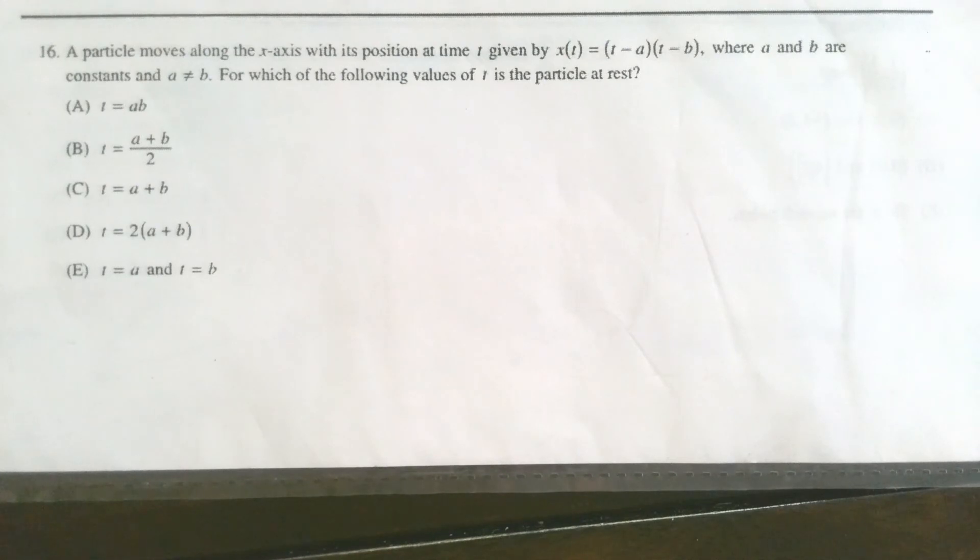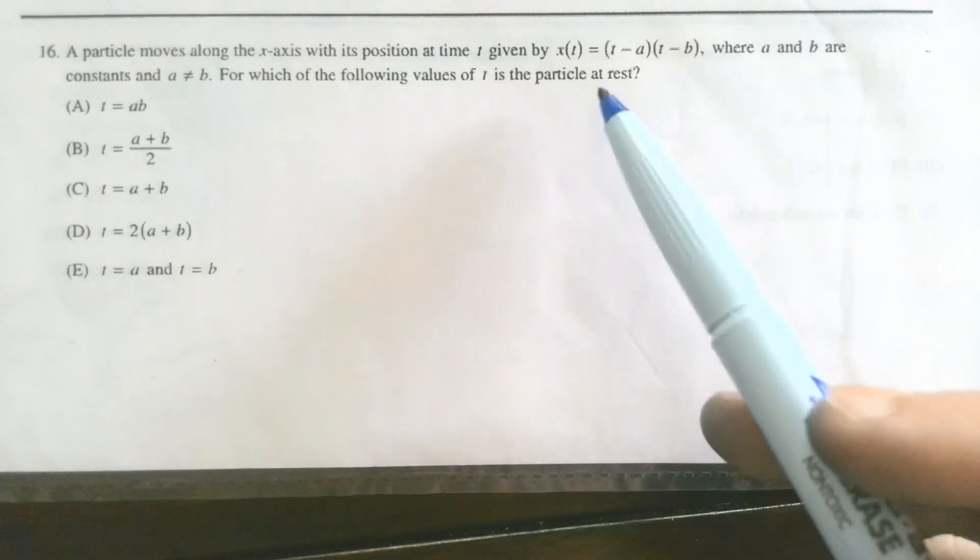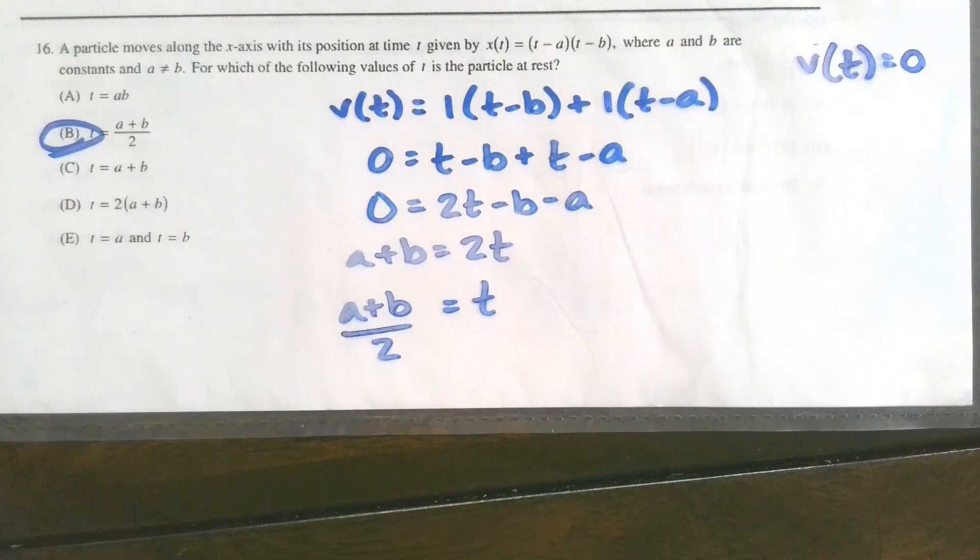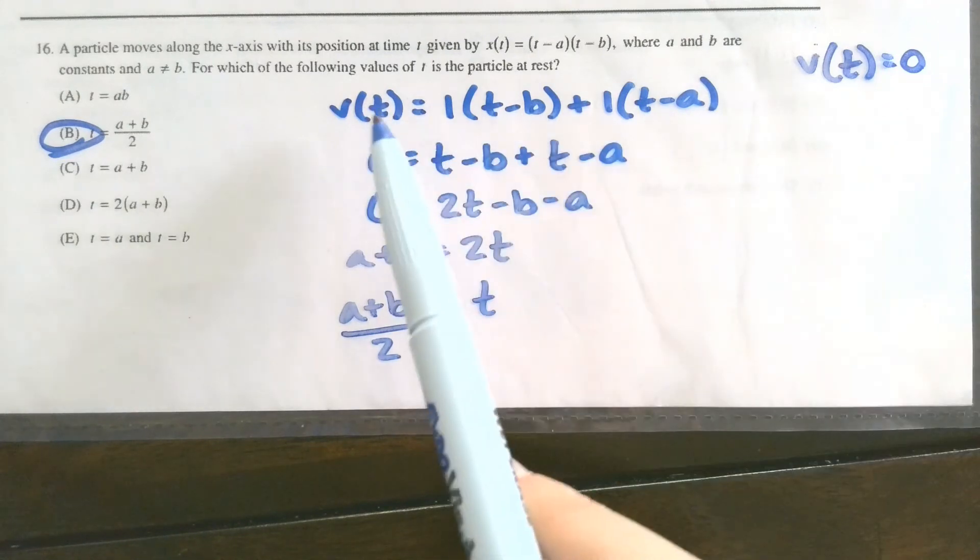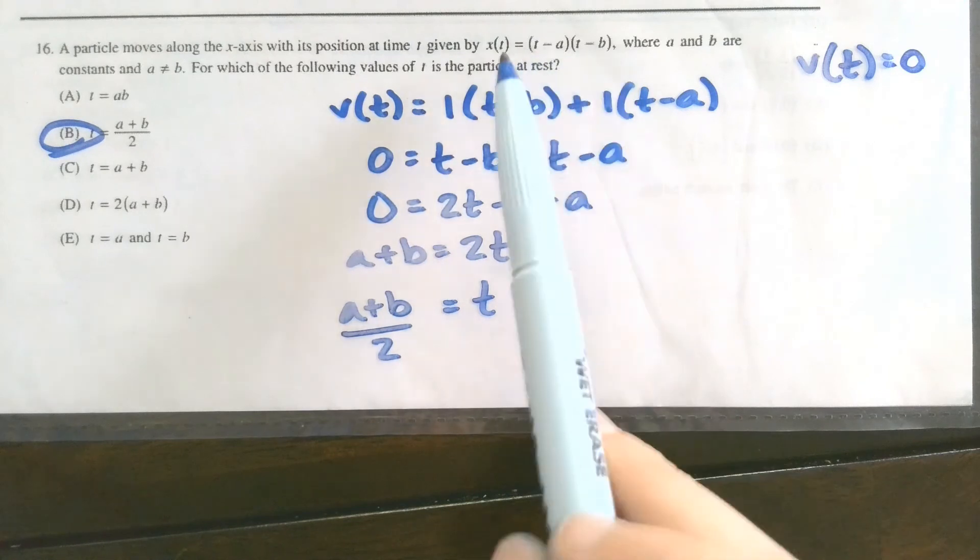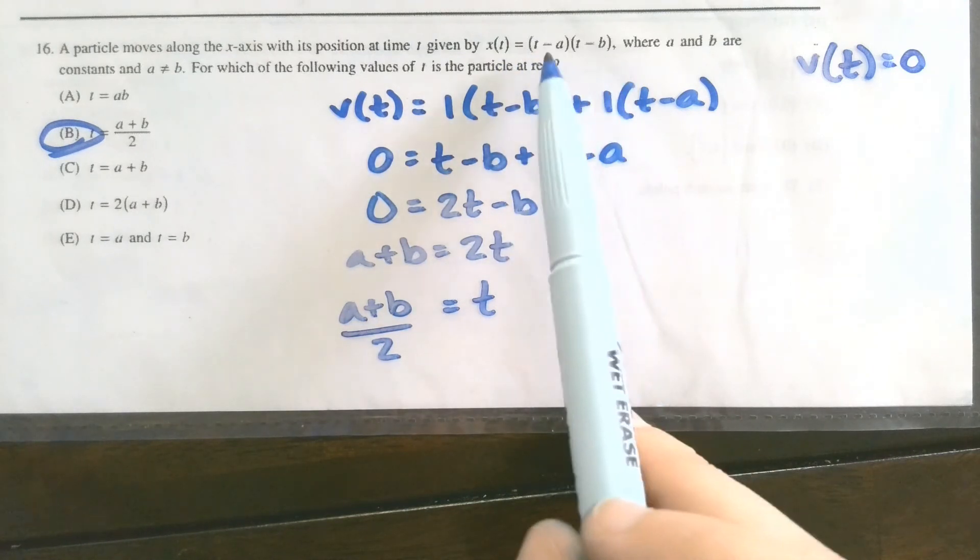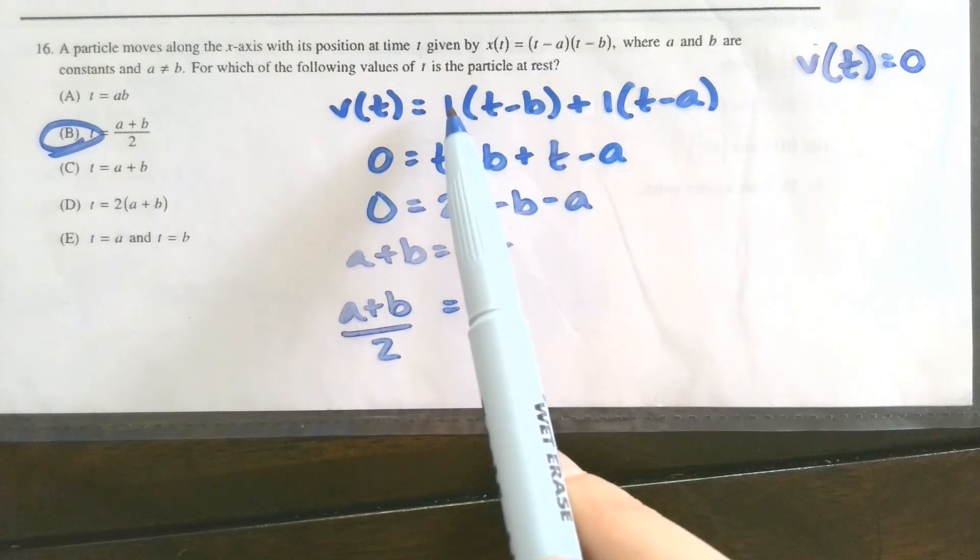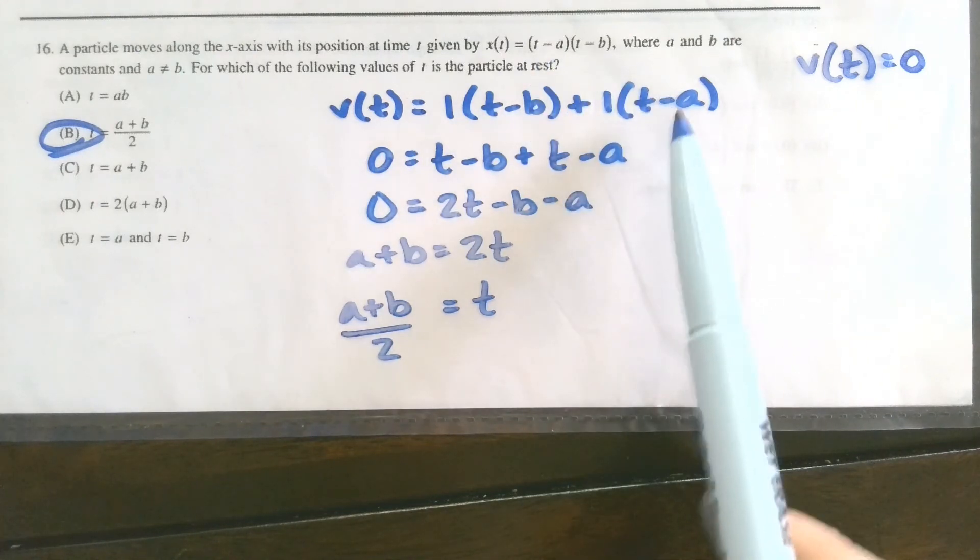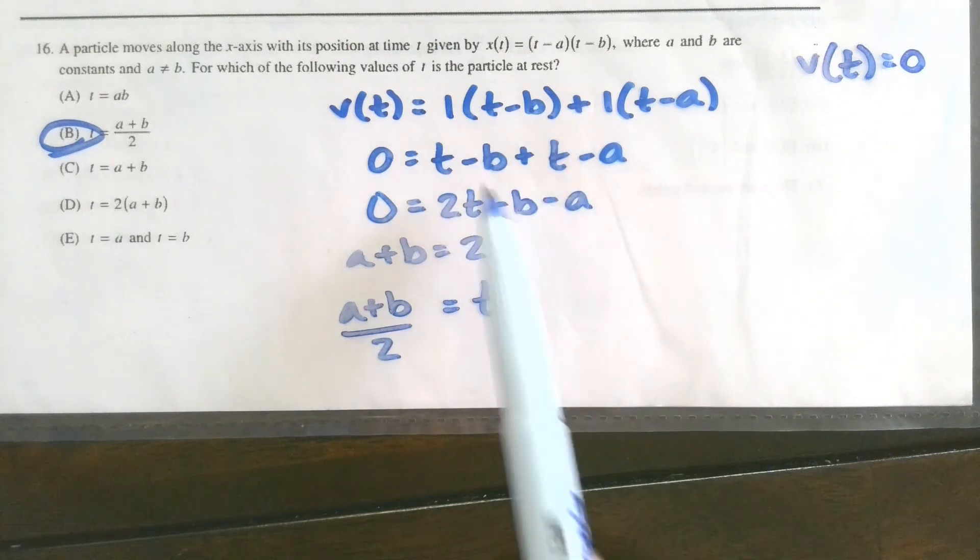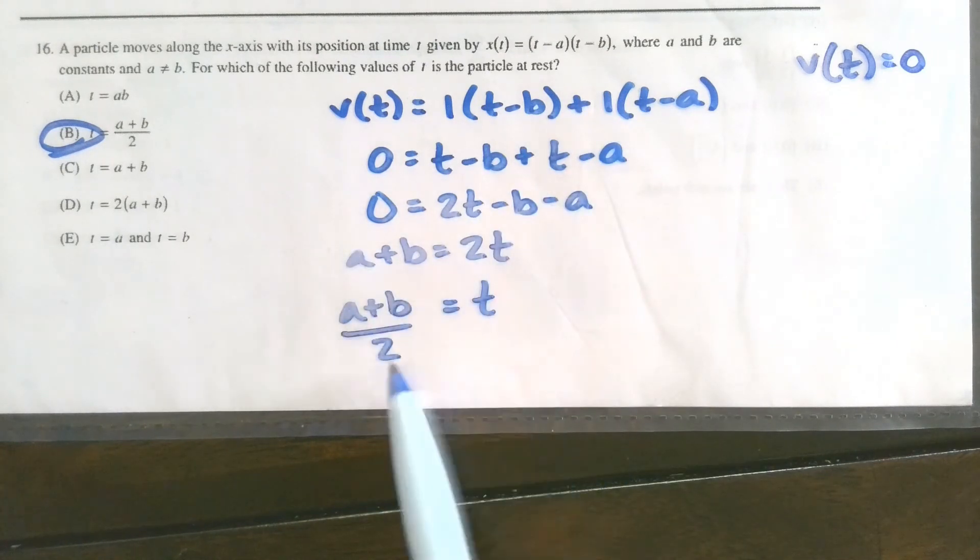Again, pause the video and try this one on your own as well. I'm trying to figure out where this particle is at rest given the position. So first, if we're looking for where a particle is at rest, that means that our velocity has to equal zero. Finding the velocity, we're taking the derivative of our position, and even though we're given something kind of generic, I can still use the product rule and take the derivative of t minus a is just going to be one times t minus b, plus the derivative of t minus b is one times t minus a. Cleaning that up a little bit, distribute my ones I guess, and then adding over my a plus b and solving for t, I get that my velocity equals zero when t equals a plus b over two.